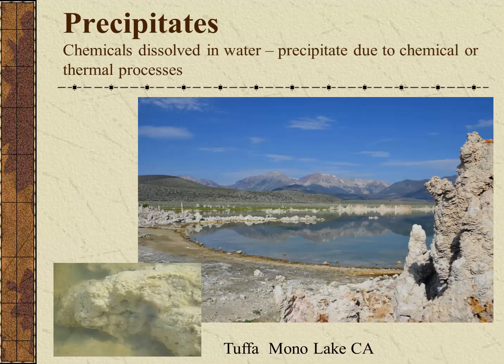Unlike evaporites, precipitates form when chemicals dissolved in water precipitate out due to chemical and thermal processes. Tufa is a unique type of limestone — the water of Mono Lake is highly saline and rich in minerals. When spring water enters the lake, it reacts and precipitates calcium carbonate into the large structures known as tufa towers.